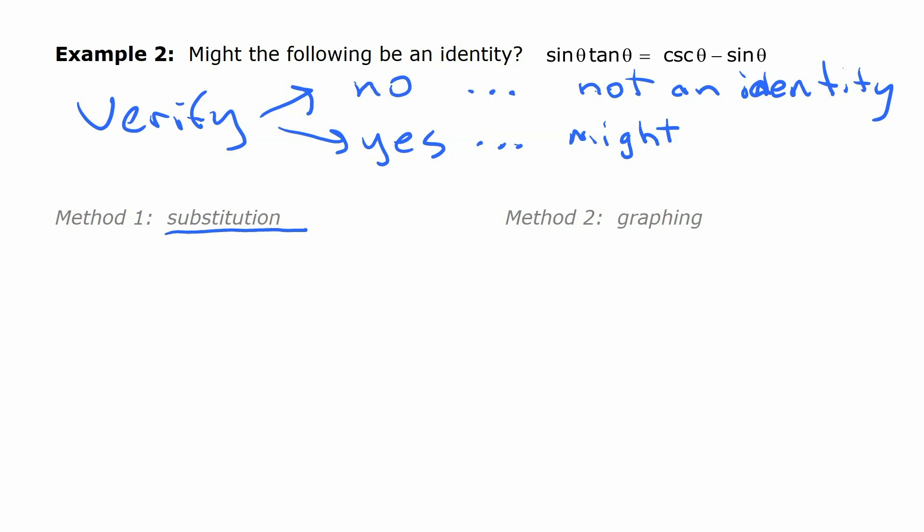So to verify by substitution as our first method, we're going to just pick a value for theta. It could be anything. I'm going to pick 2.1, let's say. And then we're going to substitute it into the left side. So we're going to have sine of 2.1 times tangent of 2.1. And on the right side, we're going to have cosecant 2.1 minus sine 2.1.